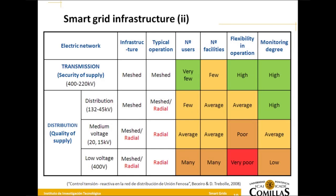The smart grid infrastructure is very complicated. In the current traditional grid, if we look from the higher transmission level to the low voltage, squares in green indicate areas that are easy to operate, manage, and monitor. However, as we go down in voltage levels, the degree of monitoring and operation quality becomes very poor. This is critical because all new distributed energy resources will be connected at low or medium voltage — levels that are currently poorly monitored and where operation is difficult and not flexible, often requiring manual intervention on-site.